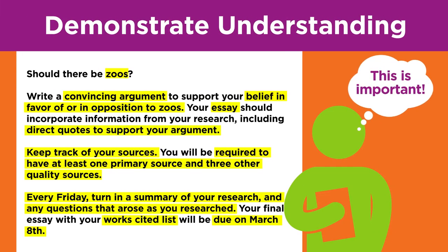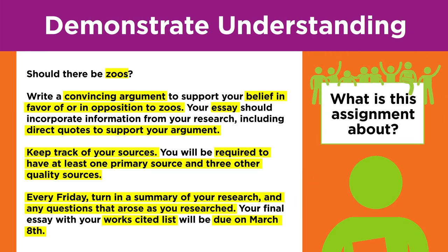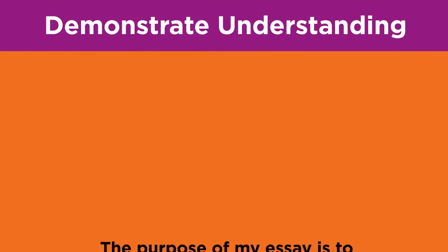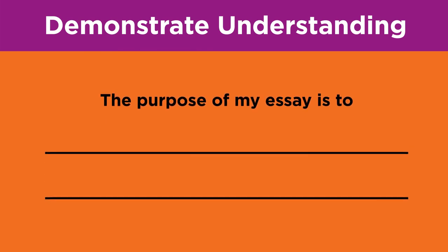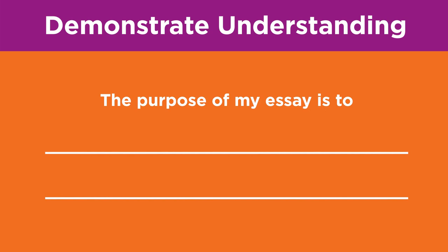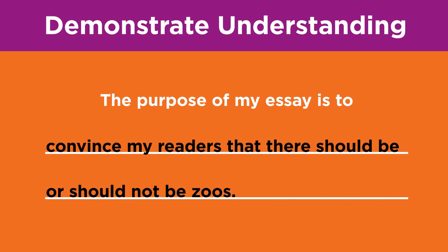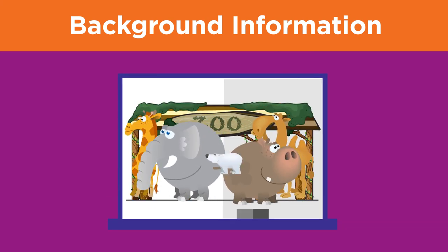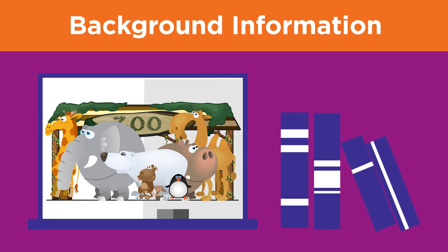As you can see, it's important to understand the assignment and your role in completing it. If your friends were to ask you what this assignment is about, could you tell them? After you read an assignment sheet and underline the important information, try to fill in the blank to this prompt: 'The purpose of my essay is to ___.' If you applied this to our example assignment, you might say: 'The purpose of my essay is to convince my readers that there should or should not be zoos.' If you cannot easily give a basic description of the main task, you should revisit the assignment sheet and then talk to your teacher. Often assignments are given based on what you are learning in class, so it's a good idea to review any class readings and work you have already done about the topic.